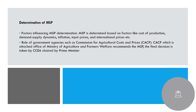Now coming to determination of MSP — the CACP, which stands for Commission for Agricultural Costs and Prices, plays a big role. It comes under the Ministry of Agriculture and Farmer Welfare. It is important to remember that CACP only recommends the prices; the actual decision is taken by CCEA, which is headed by the Prime Minister. CCEA stands for Cabinet Committee on Economic Affairs.